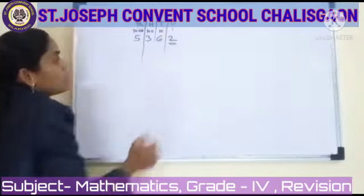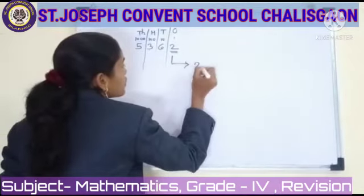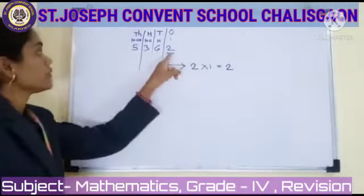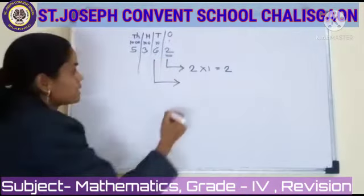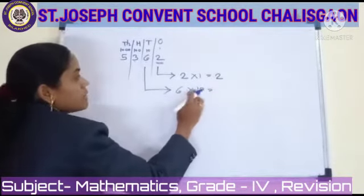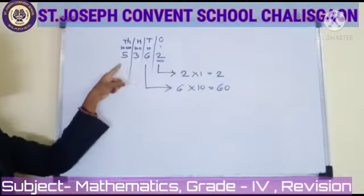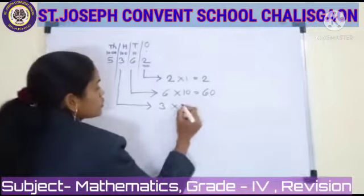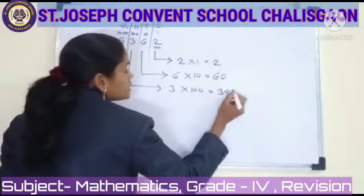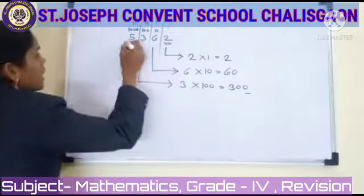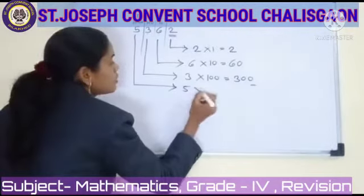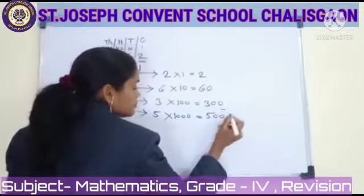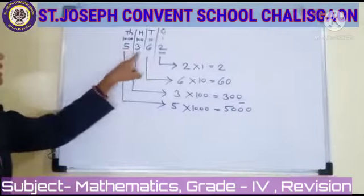Now we find out the Place Value of each digit in the number. The digit 2 is in the 1s place, so 2 × 1 = 2. That is the Place Value of 2. The digit 6 is in the 10s place, so 6 × 10 = 60 — the Place Value of 6 is 60. The digit 3 is in the 100s place, so 3 × 100 = 300 — the Place Value of 3 is 300. The digit 5 is in the 1000s place, so 5 × 1000 = 5000 — the Place Value of 5 is 5000.